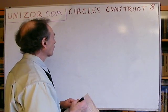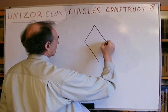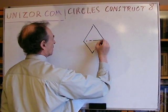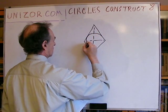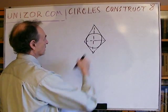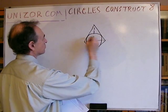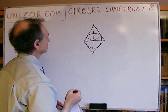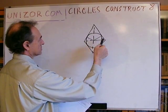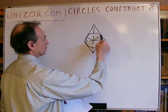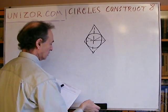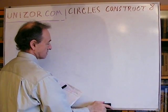Inscribe a circle into a given rhombus. If you have a rhombus, the circle touching both sides has perpendiculars to those sides as its radii, so the center of the circle is at the crossing of the diagonals of the rhombus. The radius is found by dropping a perpendicular from the intersection of the diagonals onto any side. Since it's a rhombus, all these radii are the same. That's a very simple construction.